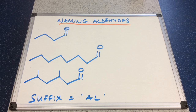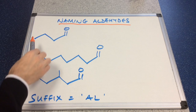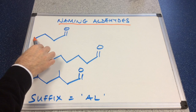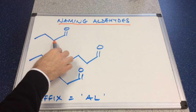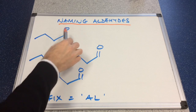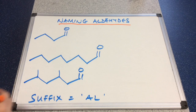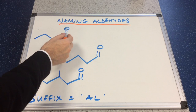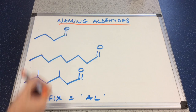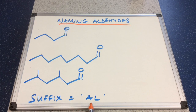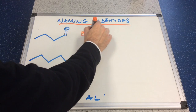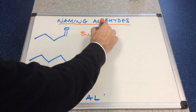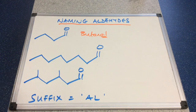So a nice and easy one to start with. Continuous carbon chain: one, two, three, four. So this is 'but-' and because it's an aldehyde it's butanal. There's that suffix there: '-al'.